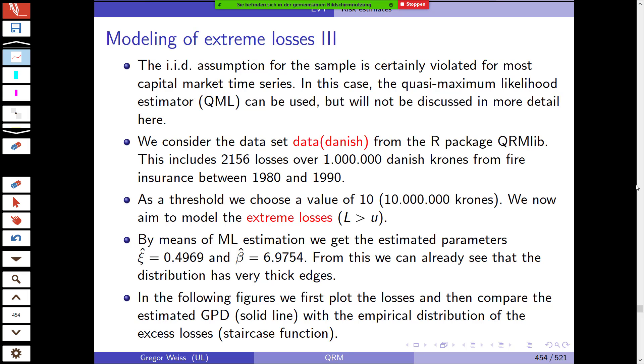So this is the theoretical setting. Let's now do this with a data sample. For most capital market time series, especially stock returns, the IID assumption is usually not fulfilled. However, for loss data from insurance, it might be that those are IID. We're looking at the Danish fire dataset from the R package QRMLIB. We have 2,156 losses over 1 million Danish kroner from fire insurance between 1980 and 1990. We choose 10 million kroner as the threshold and want to model the extreme losses that exceed this.